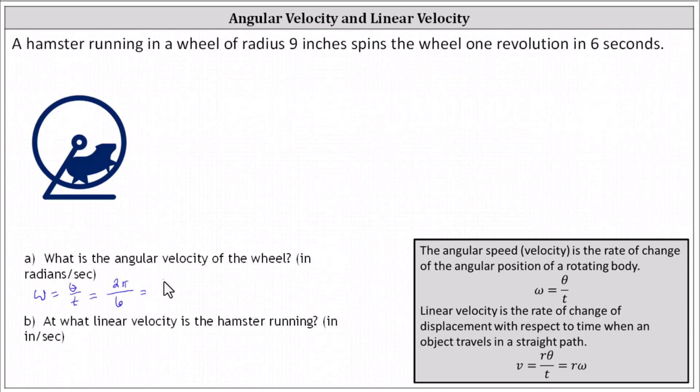Simplifying, we have pi divided by three radians per second, which is approximately 1.047 radians per second.